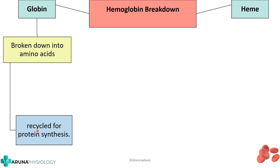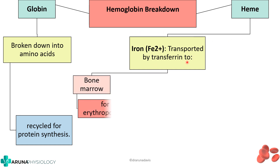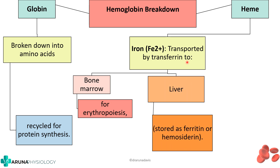Now what happens to the heme part? Heme consists of an iron part as well as a porphyrin ring. The iron part is transported by transferrin. Once heme is broken down the iron will be released and transported by transferrin to the bone marrow so it can be used for erythropoiesis, and to the liver where it can be stored as ferritin or hemosiderin.